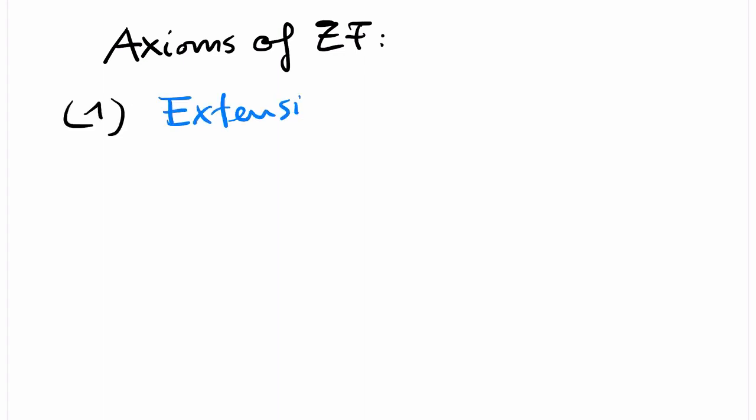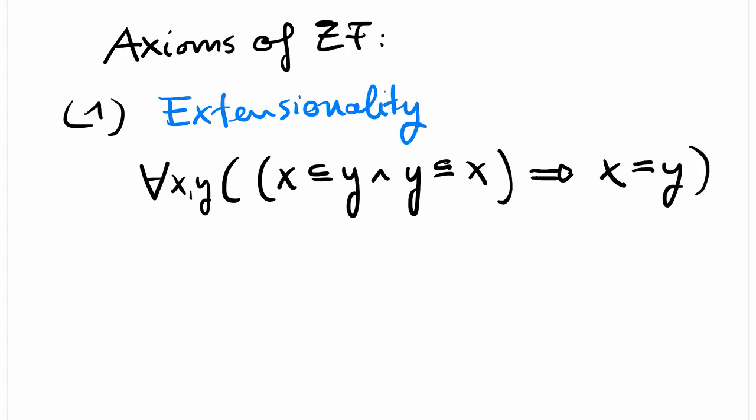The first axiom is called extensionality. It says that if two sets have the same elements, then they are equal. To translate this into logic, we use the universal quantifier. We say for all x and y, if x is a subset of y and y is a subset of x, then x and y are equal. Recall that first-order logic allows the equality symbol, no matter what the signature is.